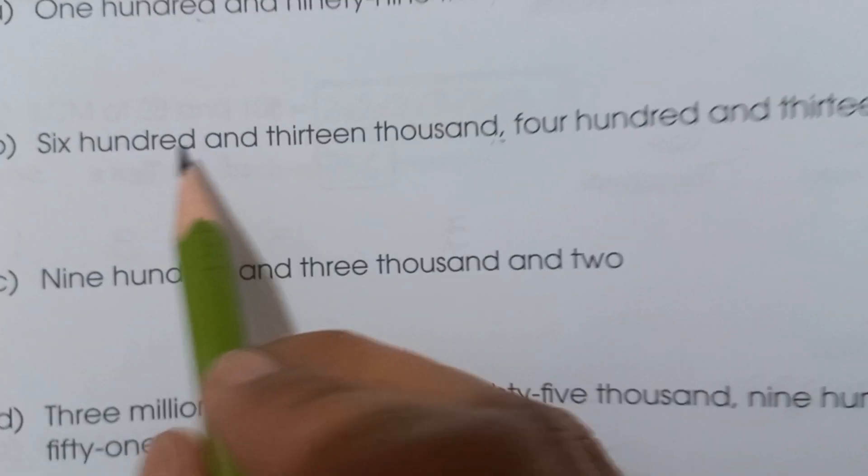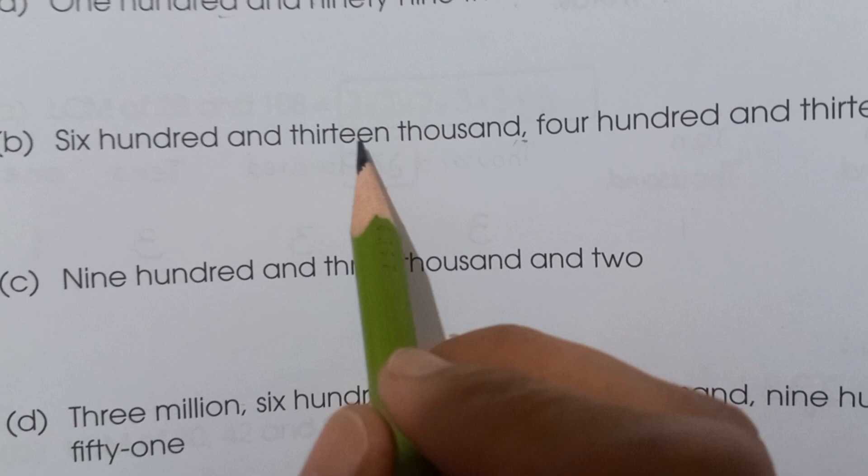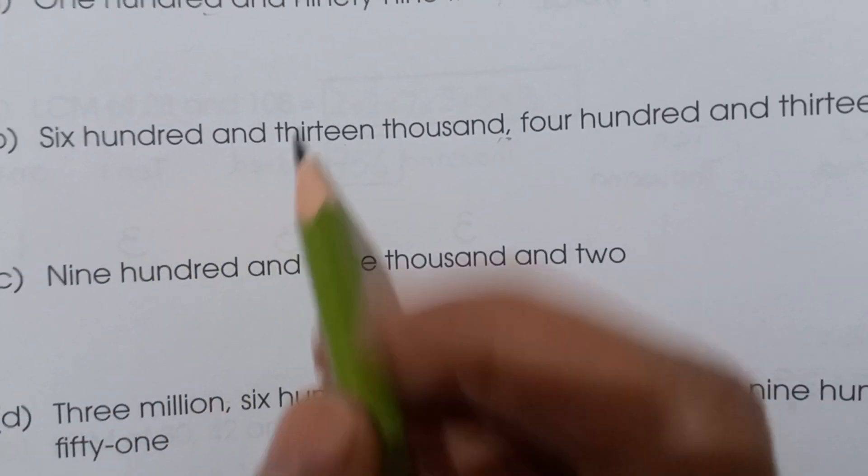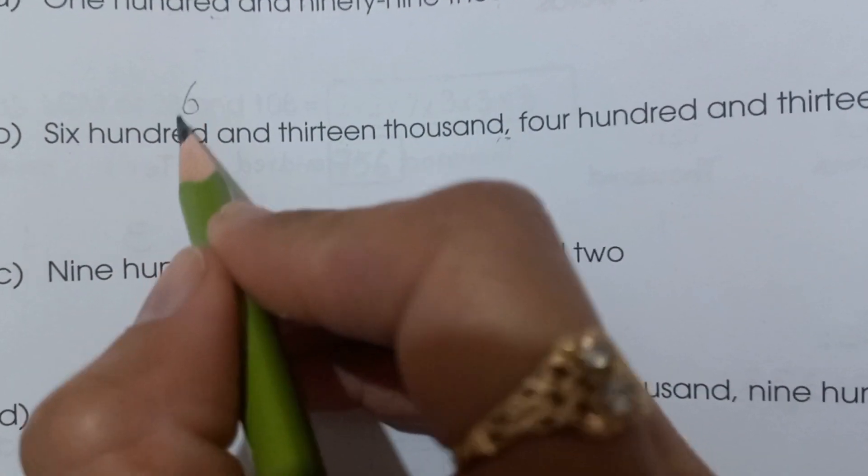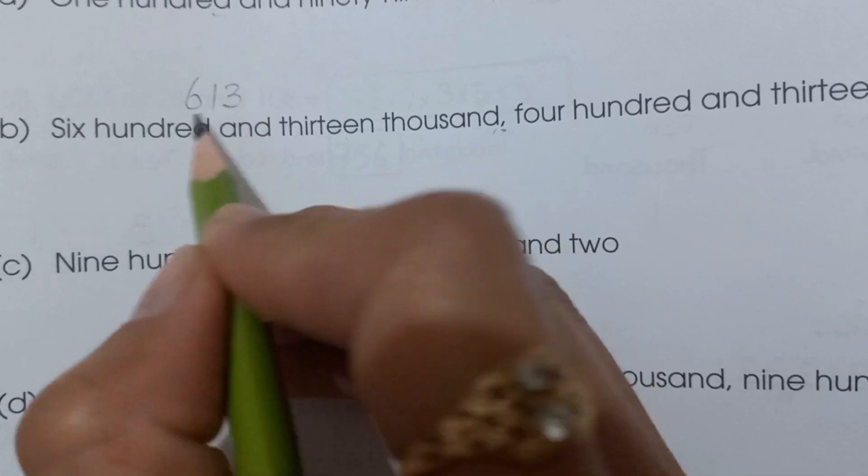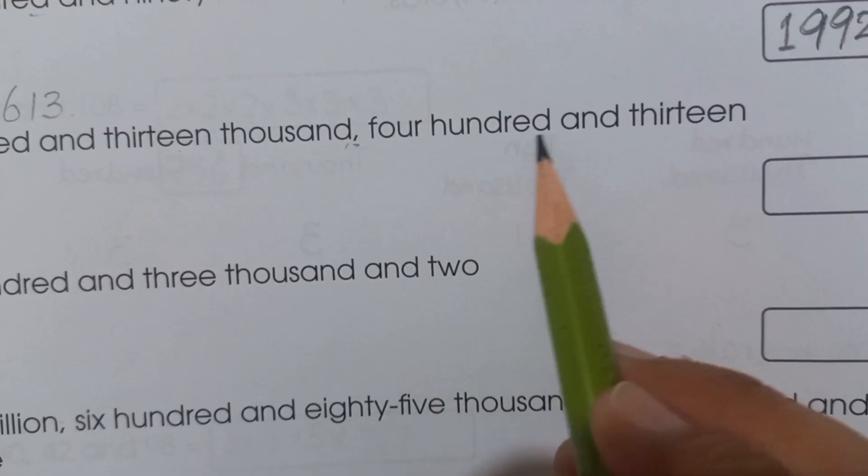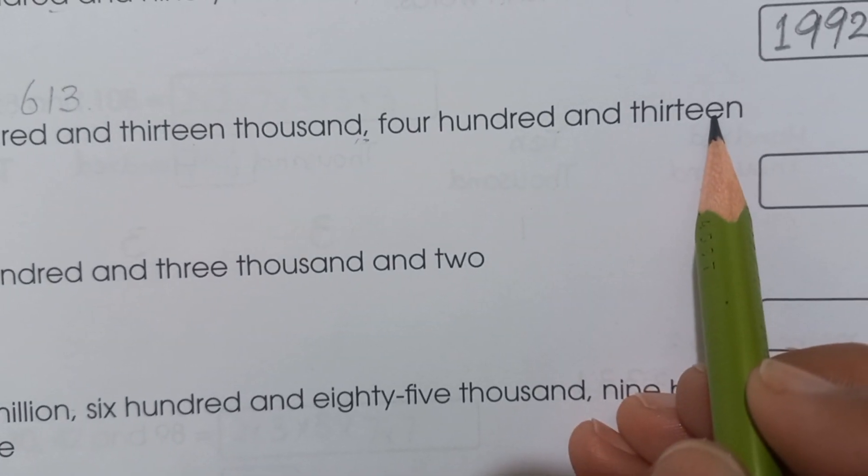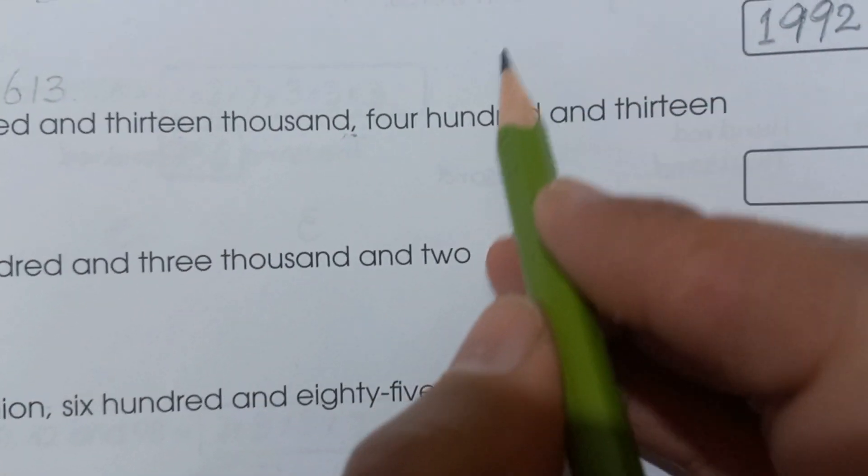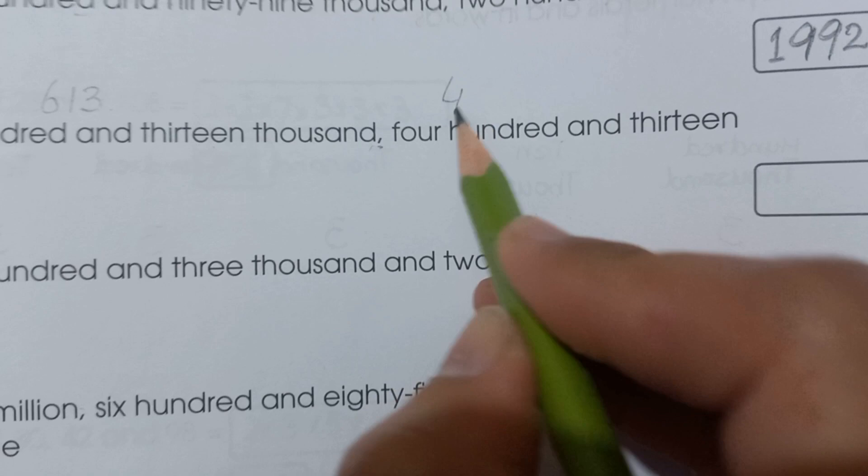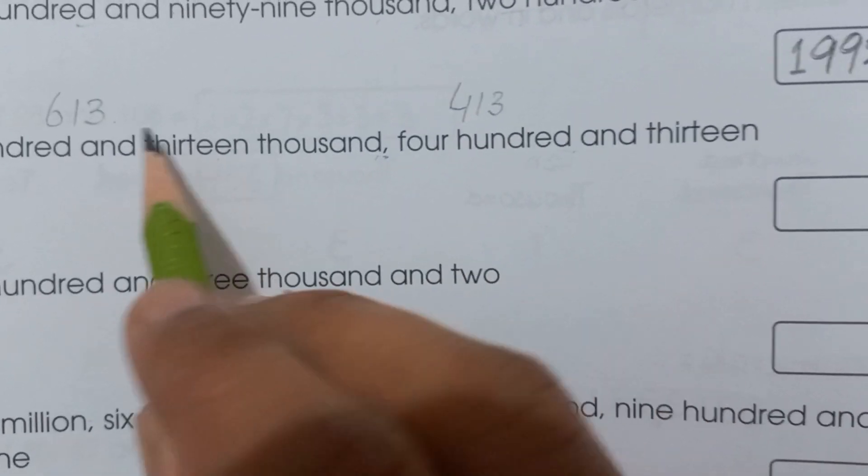Part (b): Come ahead and read out. Six hundred and thirteen thousand, four hundred and thirteen. How do we write this? 613,413.